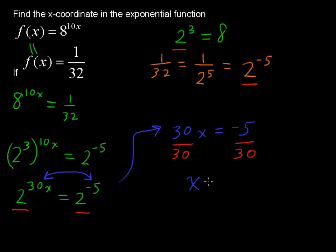So let's see. x = -5/30. That would be -1/6 after you simplify that fraction. Write that nice and bold so you can see that: -1/6.